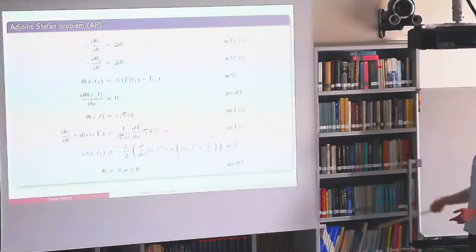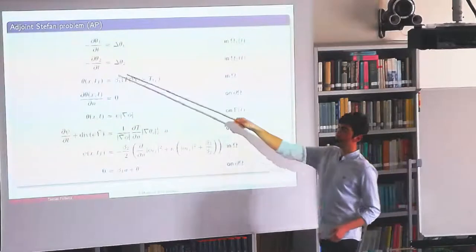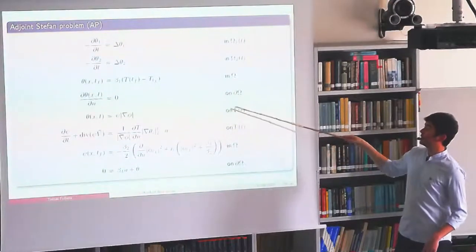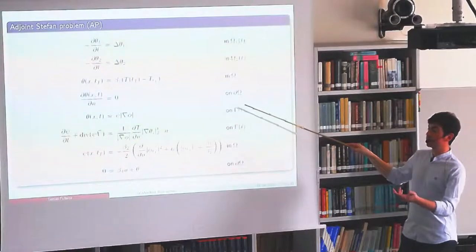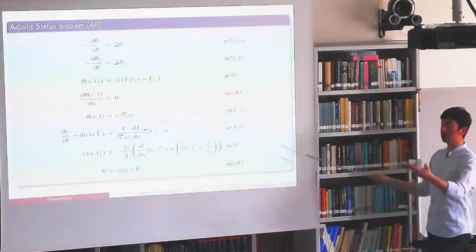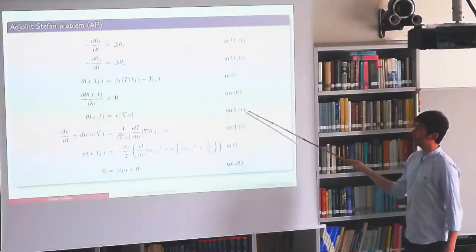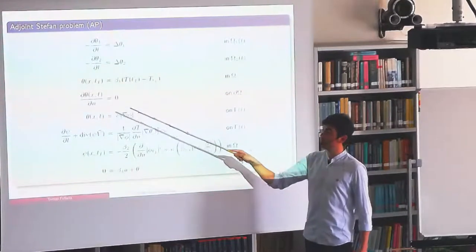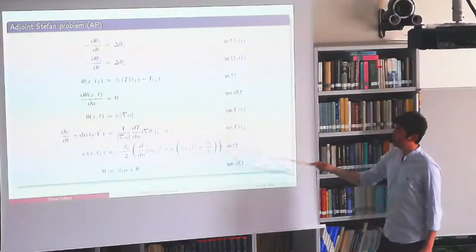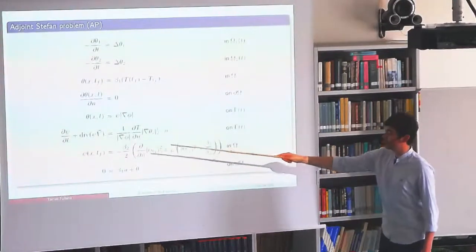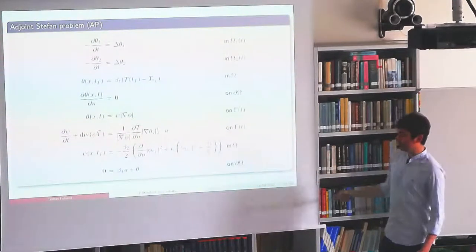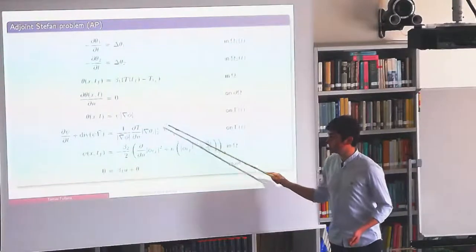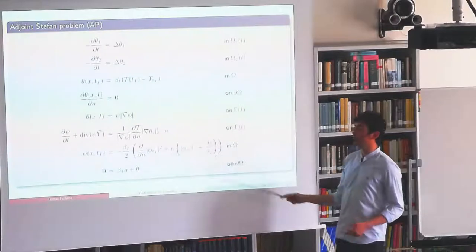Summarizing the adjoint problem: two heat equations in reverse time, initial condition for adjoint temperature, the control variable mapped to a homogeneous Neumann boundary condition, and Dirichlet boundary condition at the interface equal to psi times the Hamiltonian of the forward level set phi. The adjoint level set psi is initialized with an extra curvature term from shape calculus, and its advection equation has a source term depending on the jump in adjoint temperature. The structure is very similar to the forward problem.